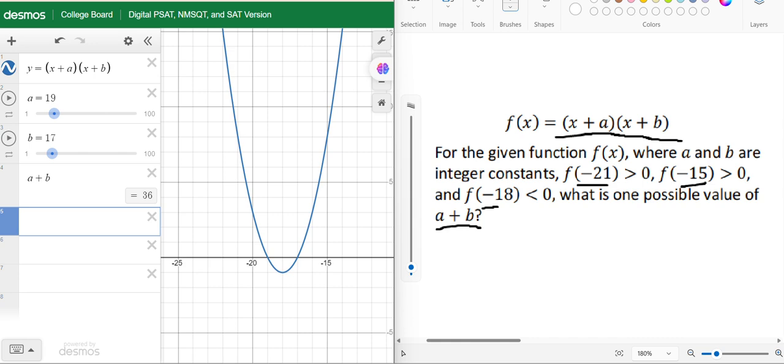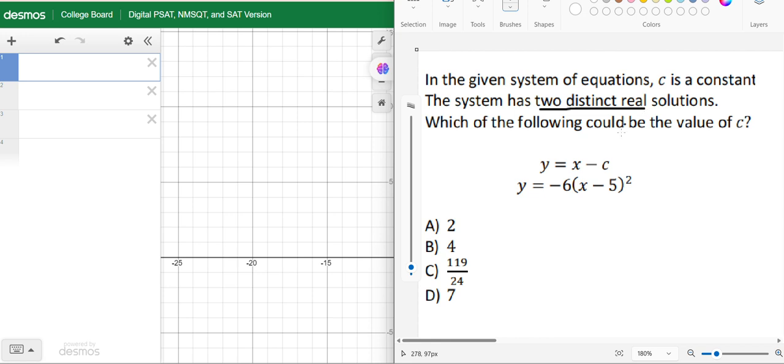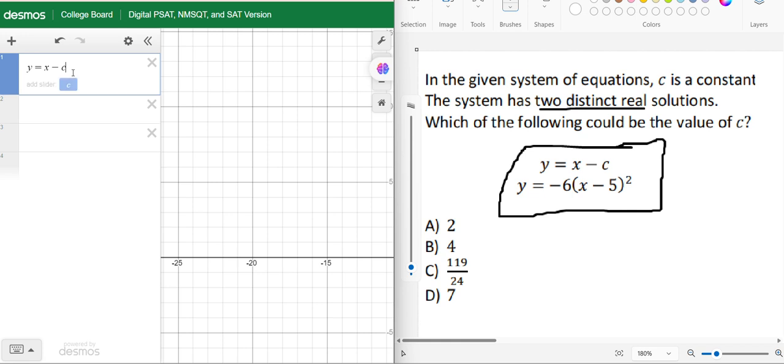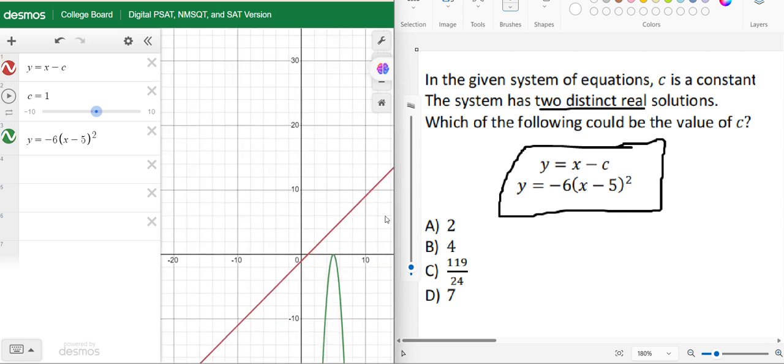So let's get to another question. This is question number two for today. In this question we have given a system of equations, and c is a constant. The system has two distinct real solutions. For which value of c is it true? We have to find the value of c. Let us type the two equations in Desmos: y equals x minus c and another y equals -6(x - 5)².